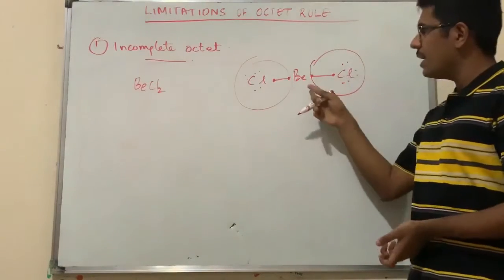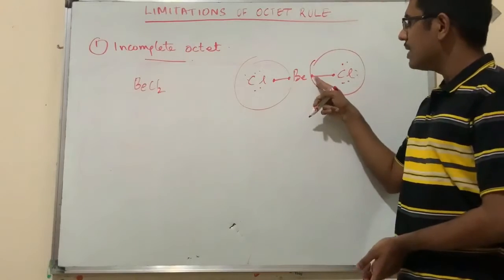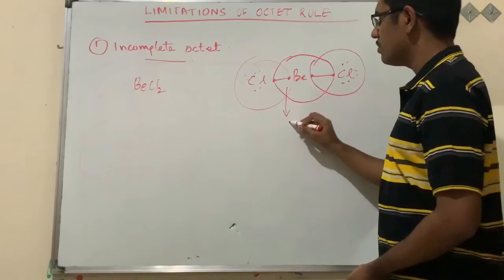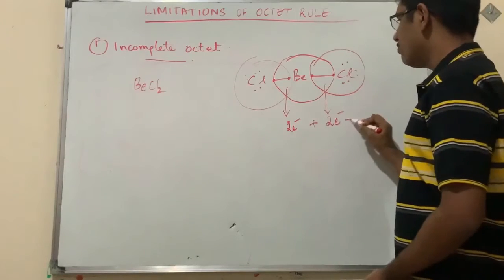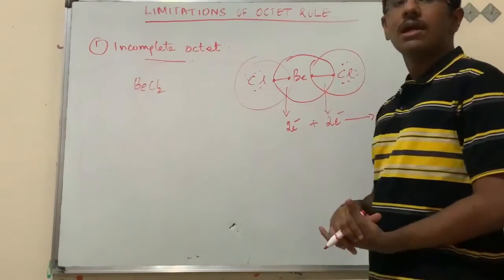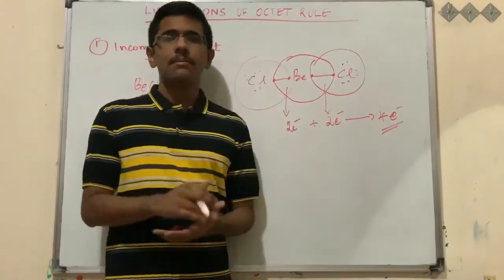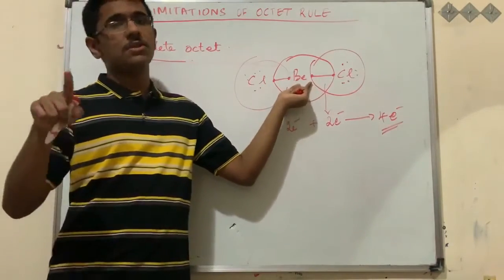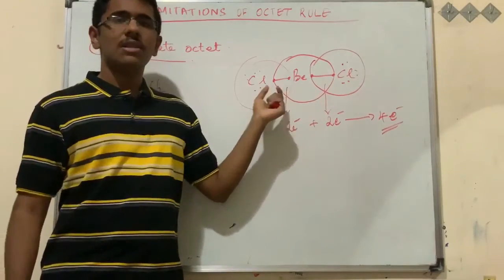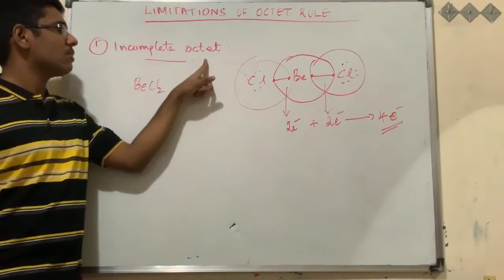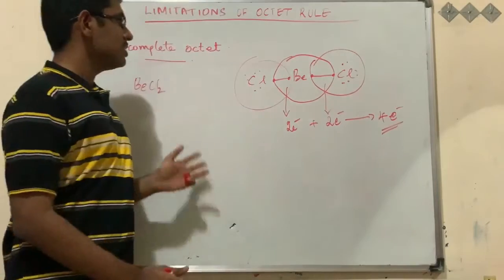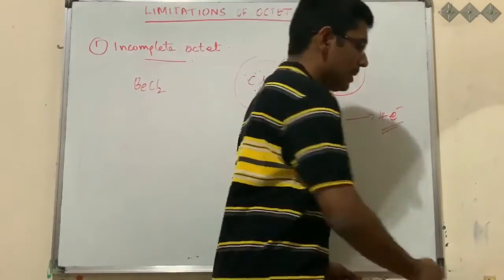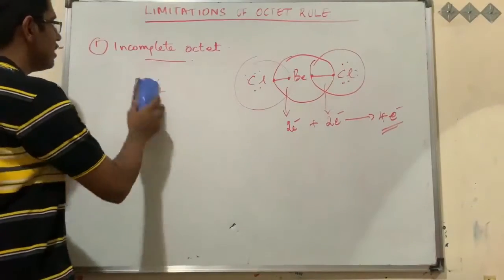However, beryllium only has four electrons total — two from each bond with chlorine. Despite having only four electrons, beryllium chloride is highly stable. According to the octet rule, it should be unstable, but that is wrong — the compound is stable. This is the first limitation: the octet rule cannot explain the stability of incomplete octet compounds such as beryllium chloride.